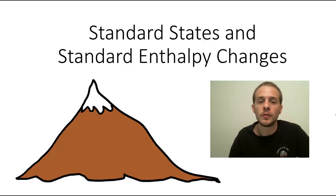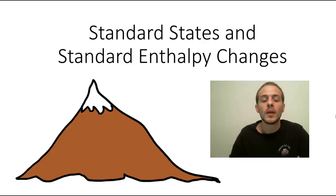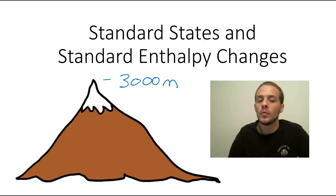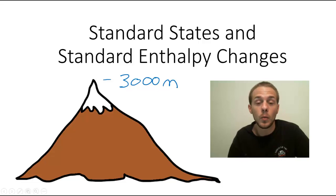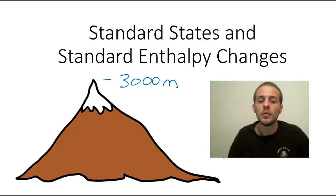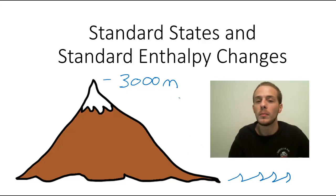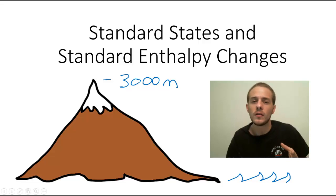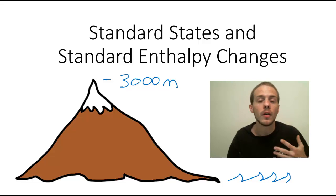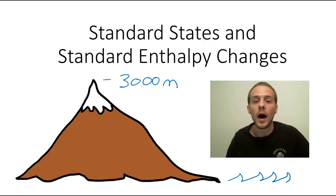We can understand these concepts by referring to a simple mountain altitude analogy. Imagine we have a mountain with an altitude of 3000 meters. In order to define the altitude of something, we have to define it relative to some value that we all agree is zero — and that value is sea level. So this mountain is 3000 meters above sea level. Sea level is basically like a standard: a zero value to which we can compare the altitudes of other mountains, buildings, or any other tall object.